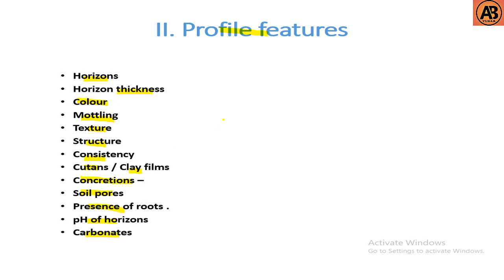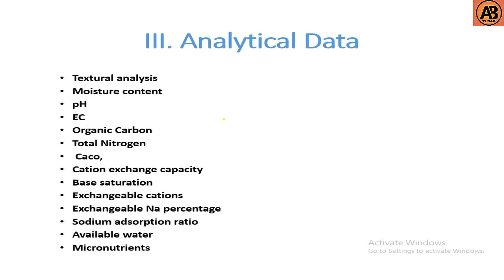Analytical data required for a soil survey includes: textural analysis, moisture content, pH, EC, organic carbon, total nitrogen, CaCO₃, cation exchange capacity, base saturation, exchangeable cations, exchangeable sodium percentage, sodium absorption ratio, available water, and micronutrients.